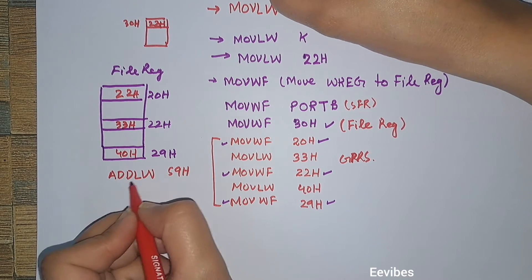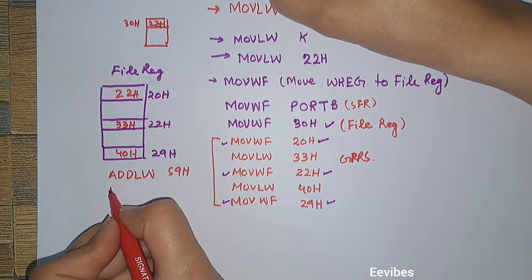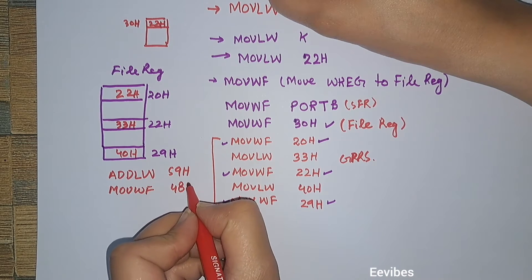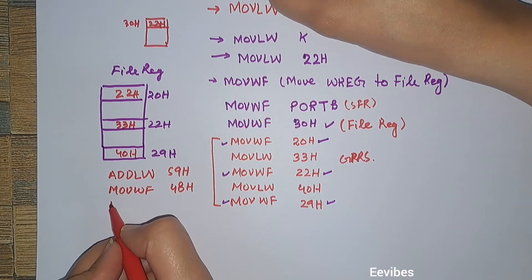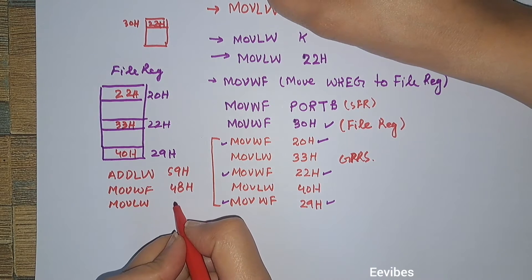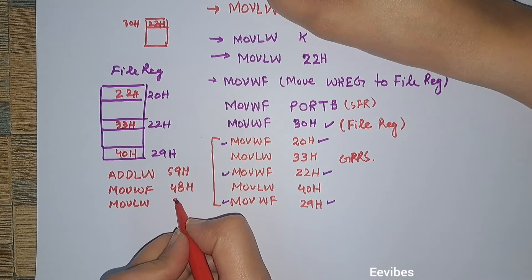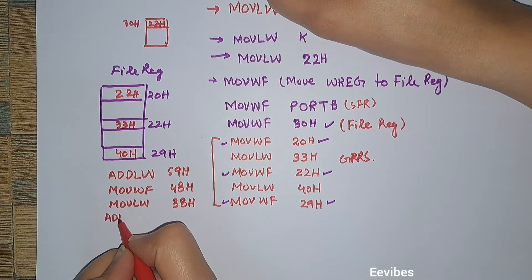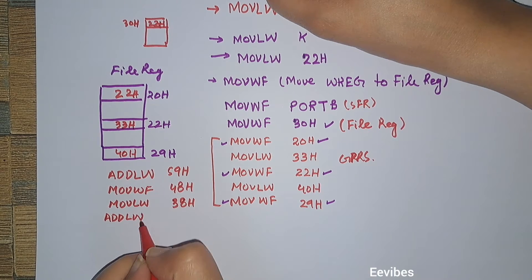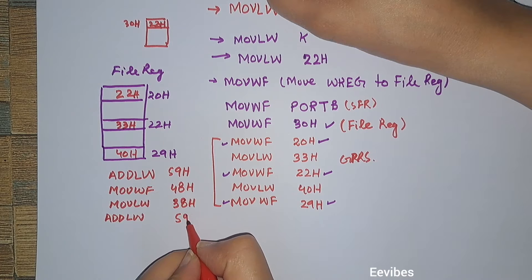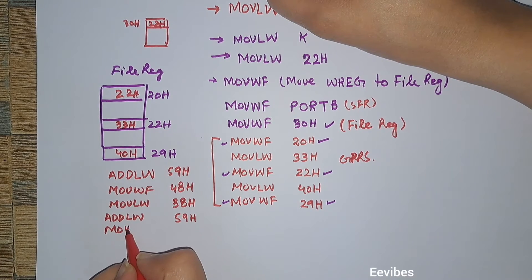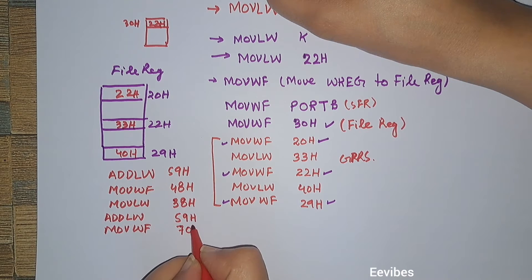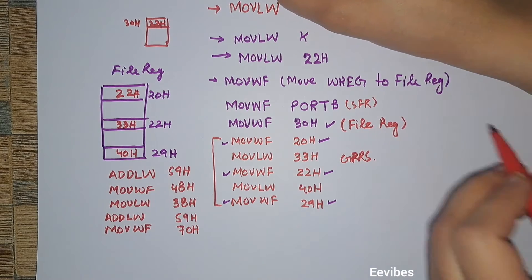Let's write some instructions: ADDLW 59 hex, then Move W to File 48 hex, then Move Literal to W 38 hex, then ADDLW 59 hex, and Move W to File 70 hex. We will trace through these to see the results.